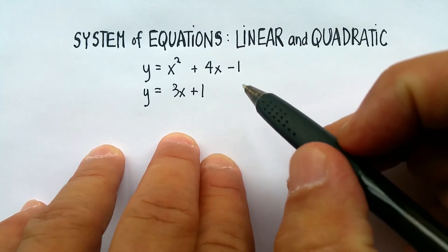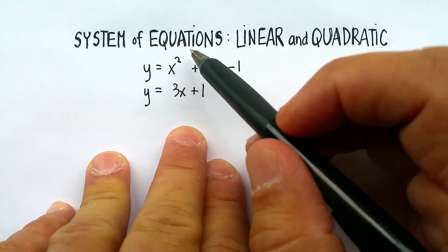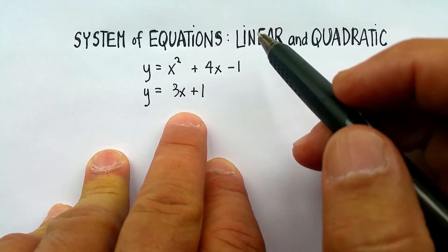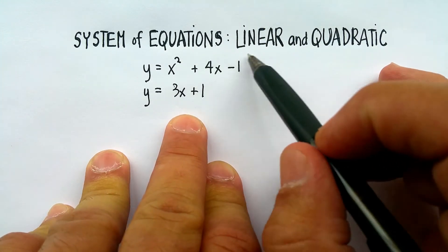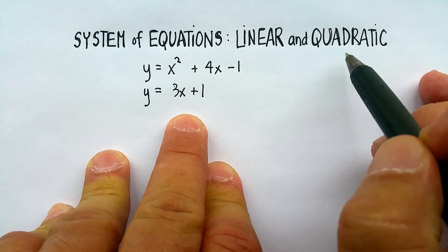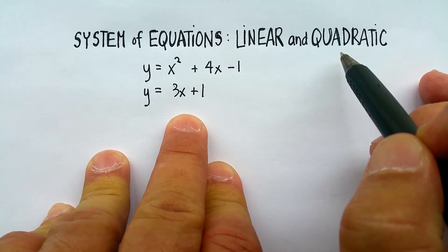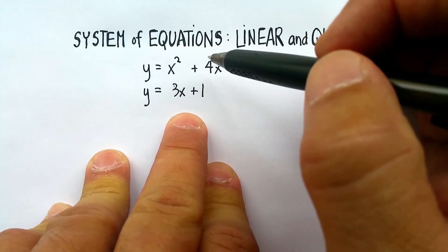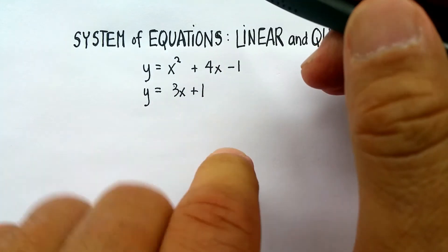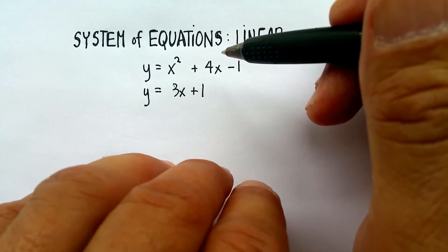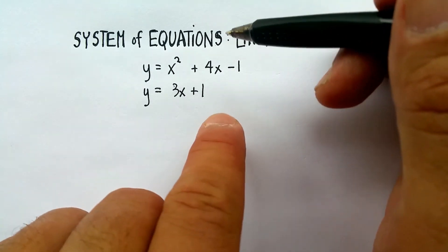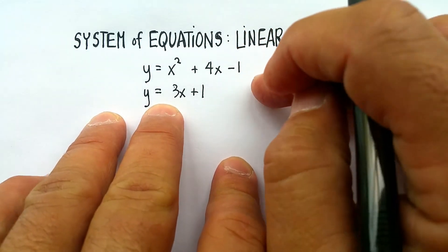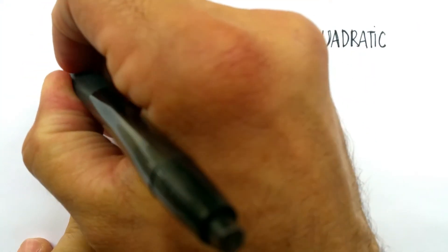In this video we're going to look at a system of equations, but this particular system is going to have a linear equation and a quadratic equation in it. A system of equations is a system where there are two or more equations, and you want to find out where the common solution is — the common solution is where they intersect.